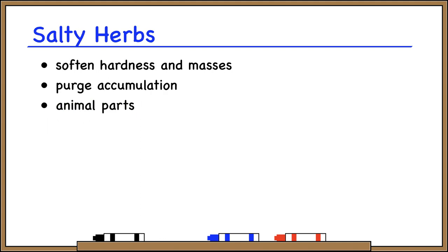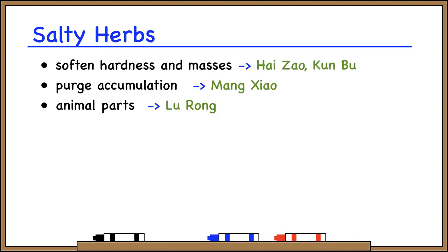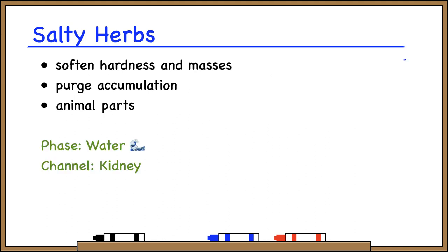Salty herbs can do a couple of different things: they can soften hardness in masses and they can purge accumulation. And then, just by tradition, any herb that comes from an animal part is marked as salty in flavor. Some examples are Hai Zao and Kun Bu — both seaweeds, salty in flavor, used to soften hard nodules like goiter and scrofula. Mang Xiao is Epsom salt and a strong laxative — it draws moisture to soften hard and dry stool and then purges it. Lu Rong is marked salty mainly because it comes from an animal. The salty flavor corresponds to the water phase and the kidney channel.